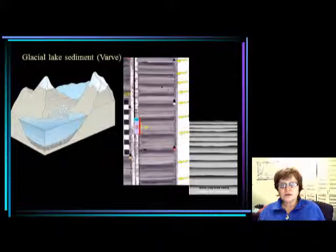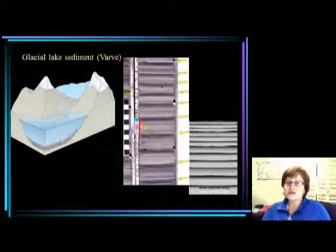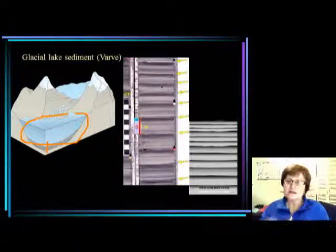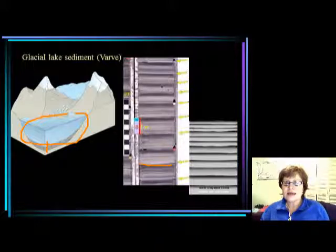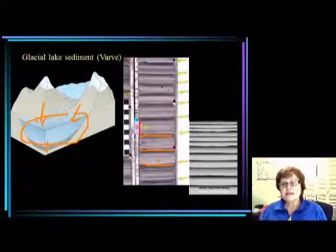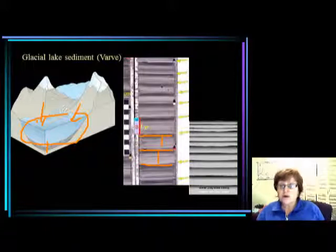Another important glacial depositional environment is the glacial lake. Anytime a glacier ends, it always terminates in a lake. In that lake, during winter when the glacier is frozen there is hardly any sedimentation — there are some algae in the lake producing a dark layer of undecayed organics. During summer, some sediment comes in from the glacier, so summer deposits are usually thicker. The winter deposits are very thin.